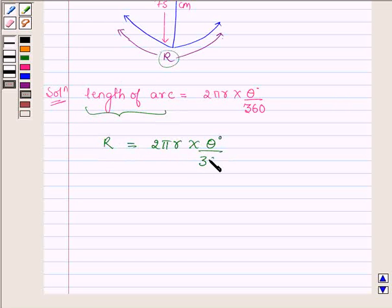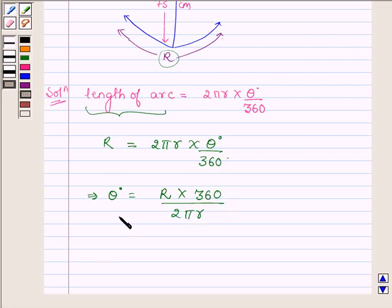So this further implies that θ° is equal to R × 360/(2πr). And since 1 degree is equal to π/180 radian,